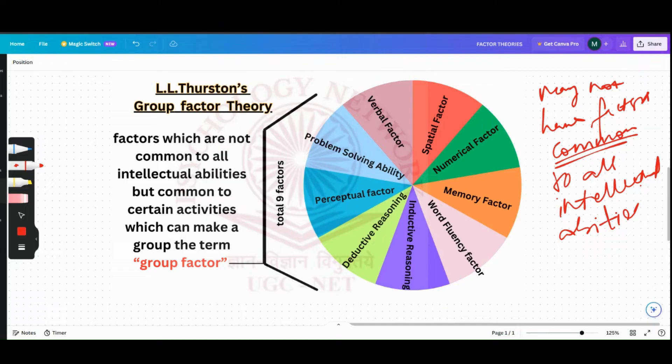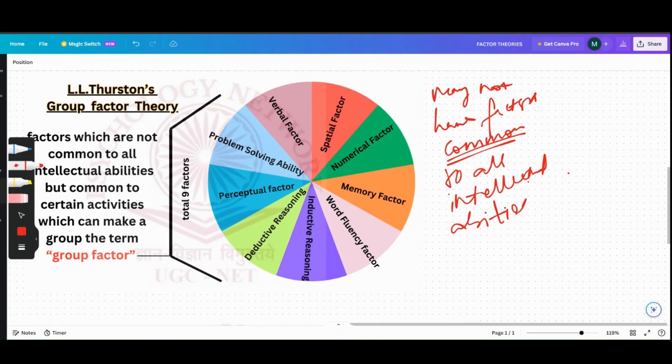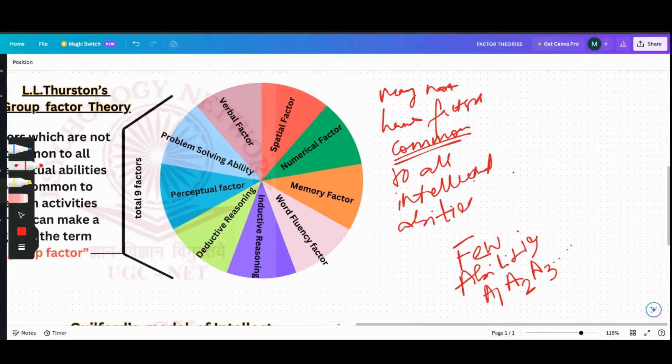Spearman had said there is a common factor. Thurston says there may not be a common factor which would be sufficing all intellectual abilities, but he said that there might be few abilities that are common to few activities. What he means is that there are few abilities - suppose ability one, ability two, ability three, and so on - which would be common to a few activities that would be grouped. Suppose there are ability four, ability five. Now ability two and ability five can be grouped, so they make a group.